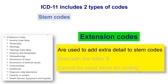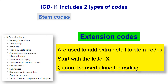Extension codes are a new feature in ICD-11. They are used to add extra detail to STEM codes — you can add one or more extension codes to a single STEM code. They can add details like right or left, specific anatomy, or a specific substance or chemical that has caused toxicity. They can also refer to discharge diagnosis types, diagnosis timing, and so on. Extension codes always start with the letter X and cannot be used alone for coding.